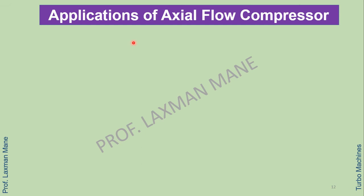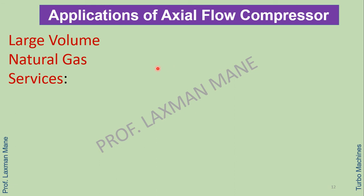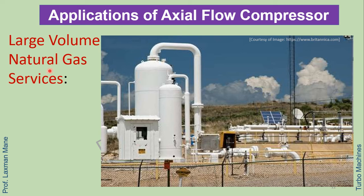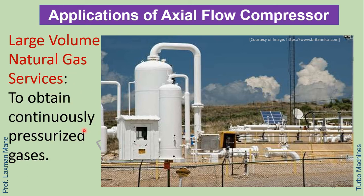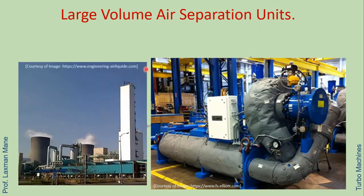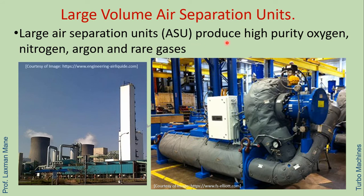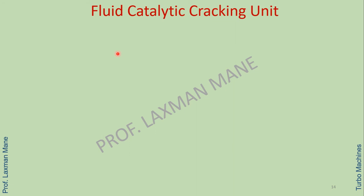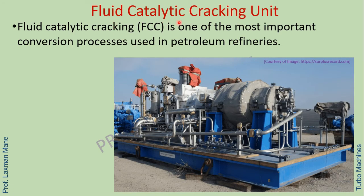Now we will see applications of axial flow compressor. Axial flow compressors are used in large volume natural gas services to obtain continuously pressurized gases. They are used in large volume air separation units to produce high purity oxygen, nitrogen, argon, and rare gases. Axial flow compressors are also used in fluid catalytic cracking units. The FCC unit is one of the most important conversion processes used in petroleum refineries.